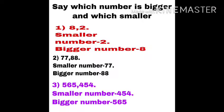Say which number is bigger and which smaller. Here we just have to find out the smaller and the bigger number. First is 8 and 2, smaller is 2, bigger is 8. Then 77, 88. Smaller is 77, bigger is 88. Third number is 565, 454. Smaller is 454 and bigger is 565.